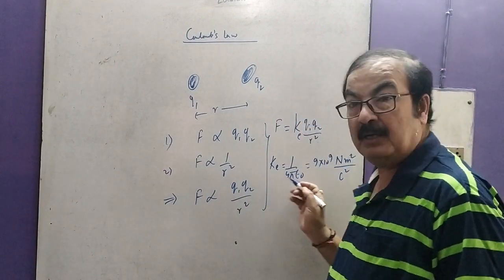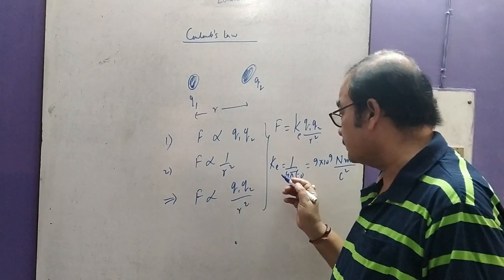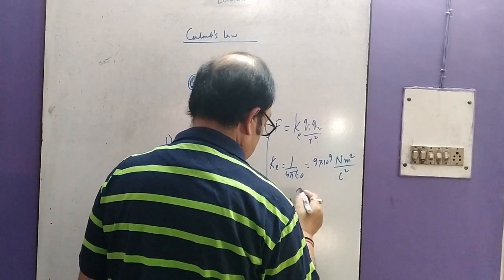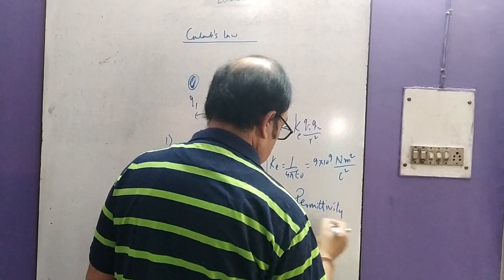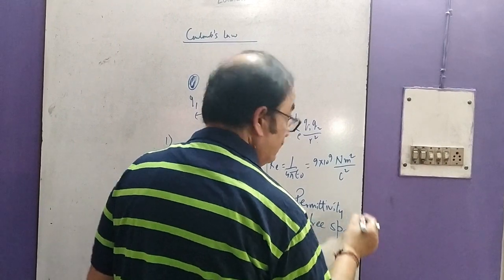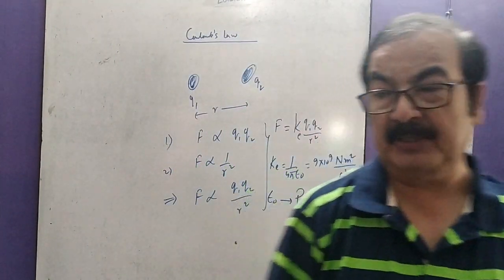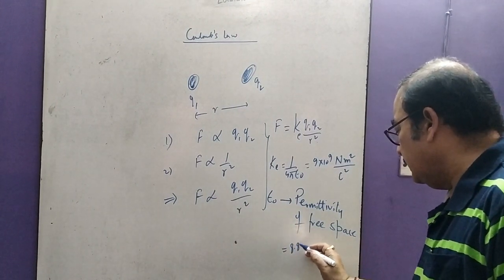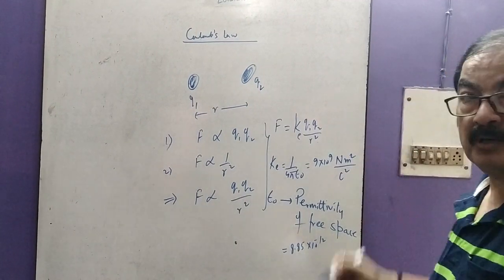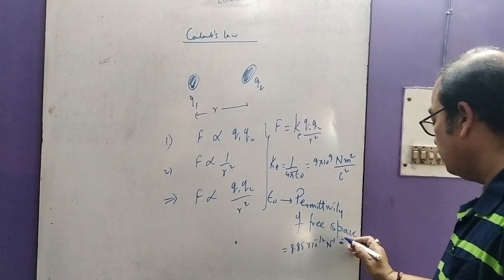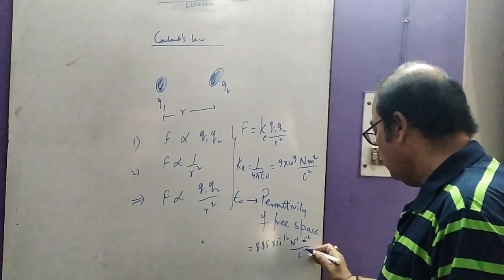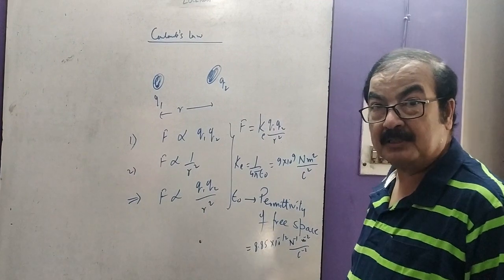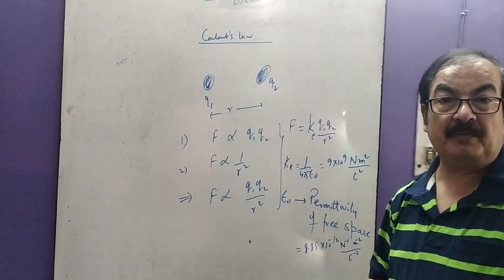You have seen one more constant here — this Ke is split in terms of another constant. What is this epsilon known as? It is called the permittivity of free space. Its value is 8.85 into 10 to the power minus 12, and the unit is Newton minus 1, meter minus 2 per Coulomb squared. If you compute 1 upon 4 pi epsilon naught, you will ultimately get 9 into 10 to the power 9.